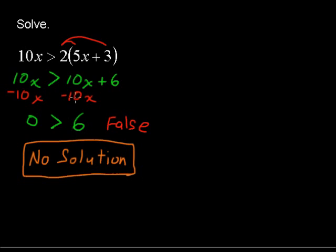On the other hand, if the variable dropped out and you get a true statement, let's say you got something like 5 is less than 10, well,